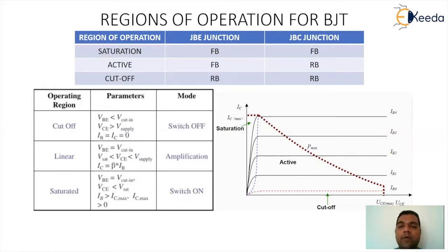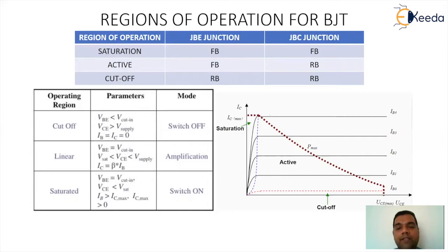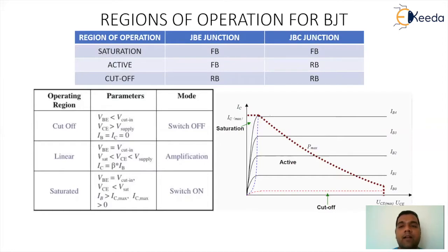When I try to interpret the junction behavior for all three regions: during saturation, both junctions — base-emitter and base-collector — are forward biased. In the active region, the base-emitter junction is forward biased and the base-collector junction is reverse biased. And in the cutoff region, both base-emitter and base-collector are reverse biased.